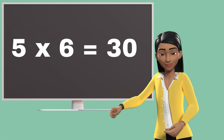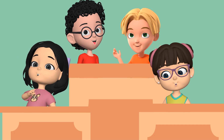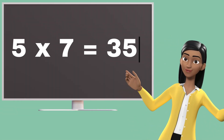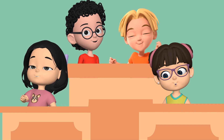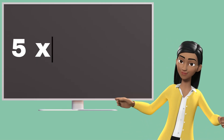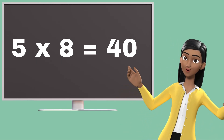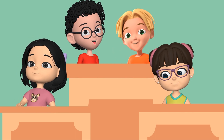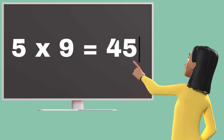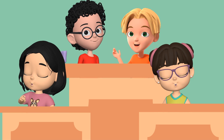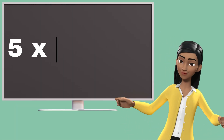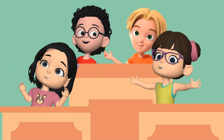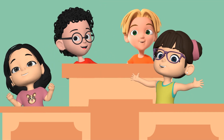Five sixes are thirty. Five sevens are thirty-five. Five sevens are thirty-five. Five eights are forty. Five eights are forty. Five nines are forty-five. Five nines are forty-five. Five tens are fifty. Five tens are fifty.